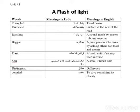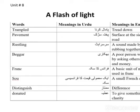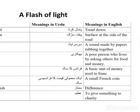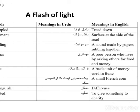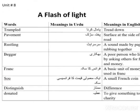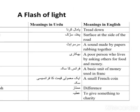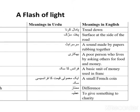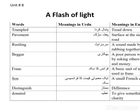Words meaning. Trampled — pamalkarna — tread down. Pavement — pohthasarak — surface at the side of the road. Wrestling — sarsarahat — a sound made by papers rubbing together.